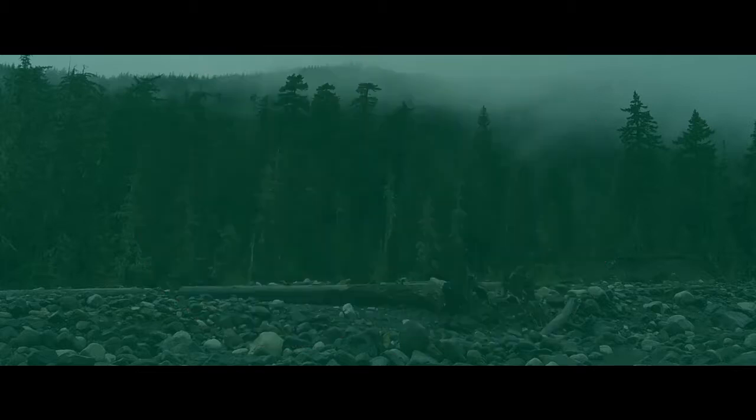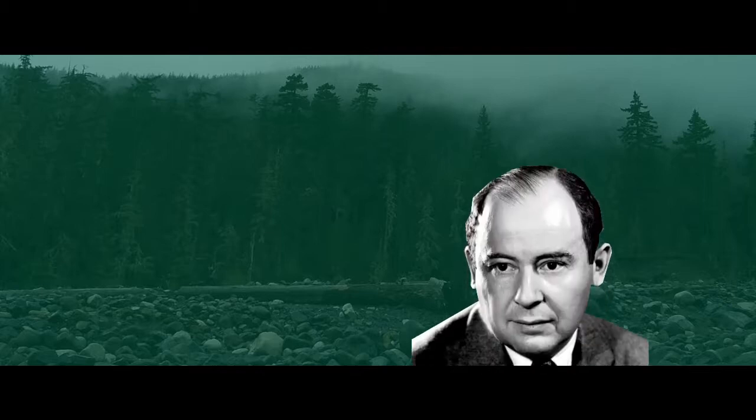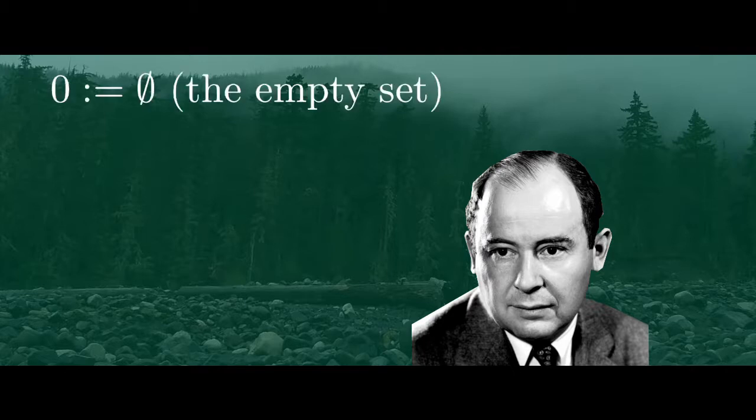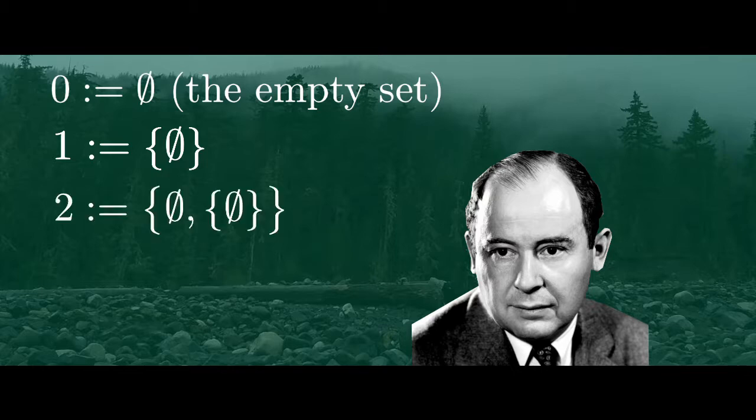One way to construct the natural or whole numbers from the theory of sets was given by the Hungarian-American mathematician John von Neumann, who defined 0 as the empty set, 1 as the set which contains the empty set, 2 as the set which contains both the empty set and the set that contains the empty set, and 3 and 4 and so on.